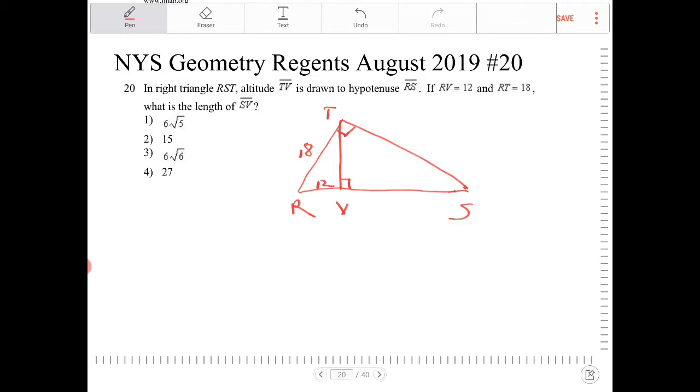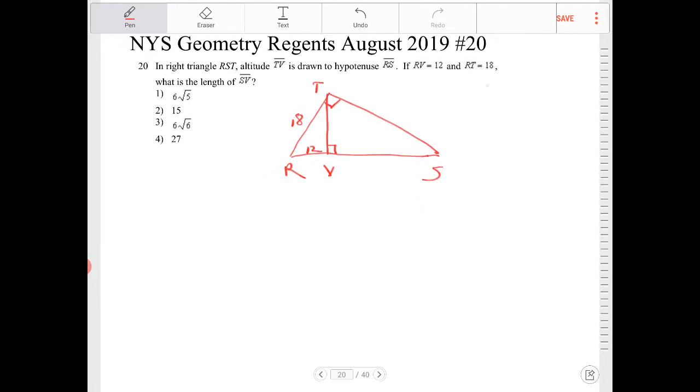Alright, so this is, once again, a classic geometric mean question. And it is good to be familiar with this setup where if you have a right triangle where you draw an altitude from the right angle to the hypotenuse,